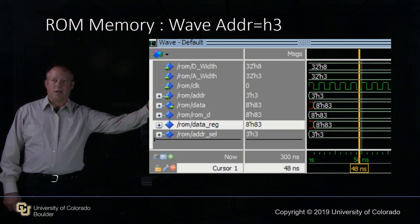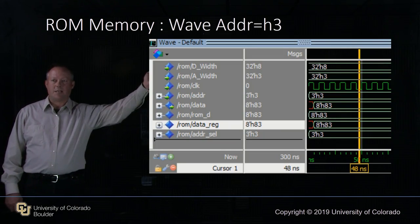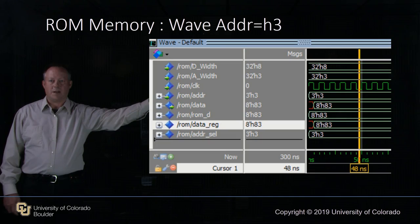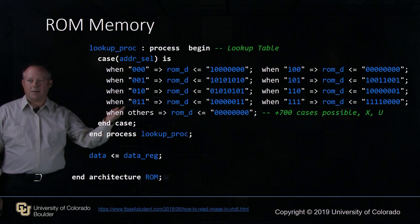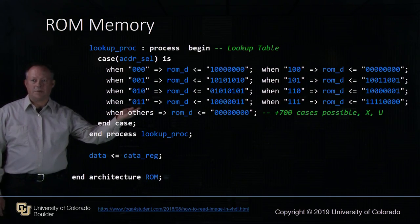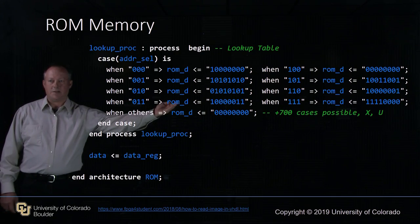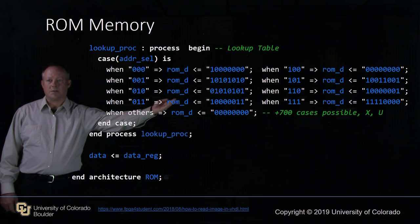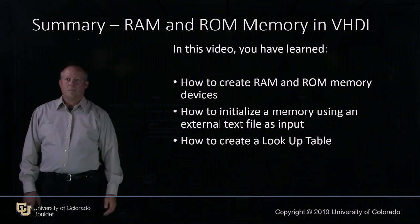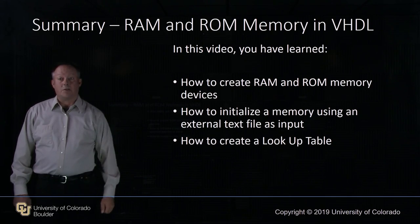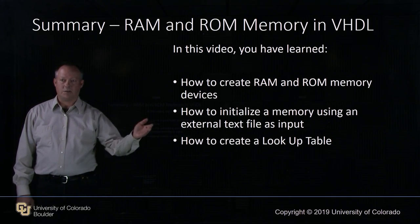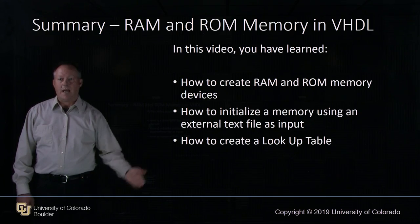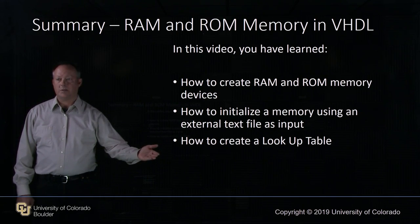Here's a quick check of our data values at hex address 3. We can see the data value is 83, and when we look back at our address 011 in the ROM table, the value is indeed 83 — 10000011. In this video you've learned how to create a RAM and a ROM memory device, how to initialize a memory using an external text file as input, and how to create a hand-built lookup table.